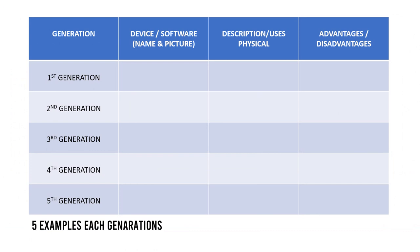I have an example table here. The first column is the generation — first, second, third, fourth, and fifth. You will give five examples for each generation: what device, software, name, or picture is associated with that generation. You can include two software, two devices, or one person mentioned in that generation.